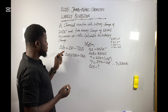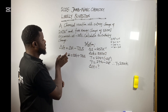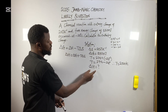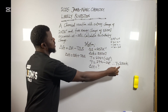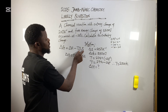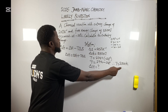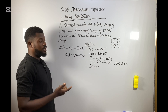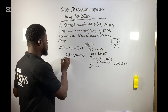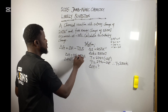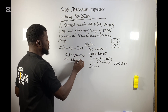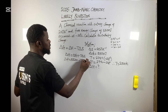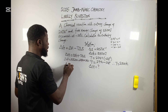Now I carry the value of delta G — 5500 — and put it here. Then I carry T — 250 — and multiply by delta S — 20. So delta H equals 5500 plus 250 times 20.